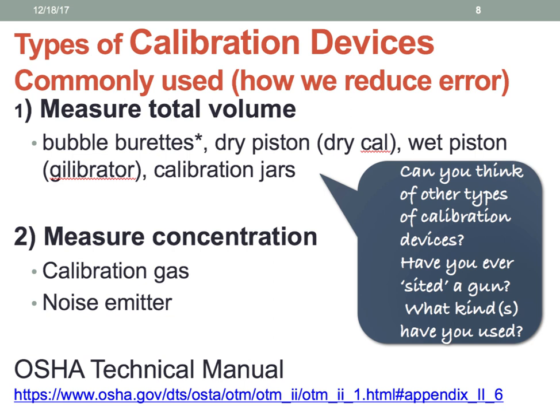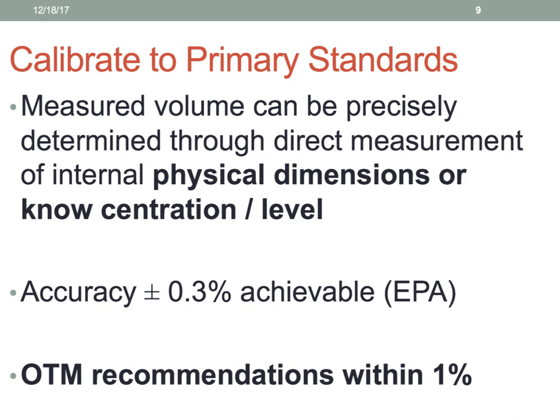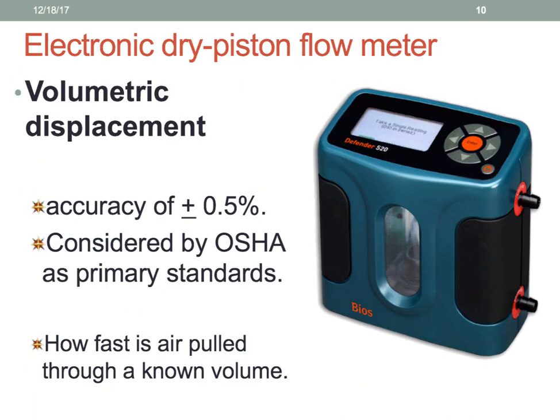Bubble barrettes are now considered secondary standards, although some people still use them as primary standards. For measured concentrations, we have calibration gas or noise emitters. Our primary standards are within 1% error rate, as recommended by the OSHA technical manual. That is one of the reasons why they recommend the use of a volumetric displacement device — our dry cal — which is within 0.5% accuracy. OSHA considers this a primary standard and it measures how much air is being pulled through our sampling device.